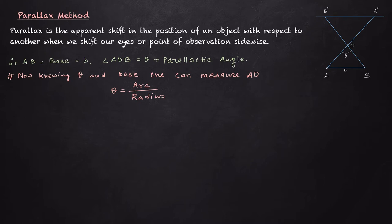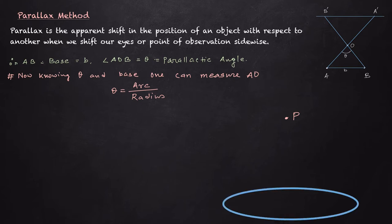This is valid only when theta is very small. The same thing can be applied to measure the distance of a star from Earth. Let there be a star at point P. Two points of observation are chosen as two positions of Earth on its orbit — let A and B be the two positions of Earth after six months on its orbit. These are the two points of observation, and we want to determine the distance of point P from Earth, that is from point A.